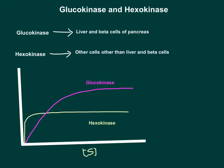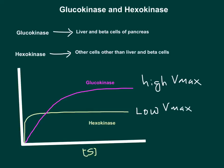The curve for glucokinase is shown in pink and the curve for hexokinase is in yellow. From these two curves, it is clear that glucokinase has a higher Vmax — a higher maximum velocity than hexokinase. Hexokinase has a relatively lower Vmax when comparing reaction velocities.